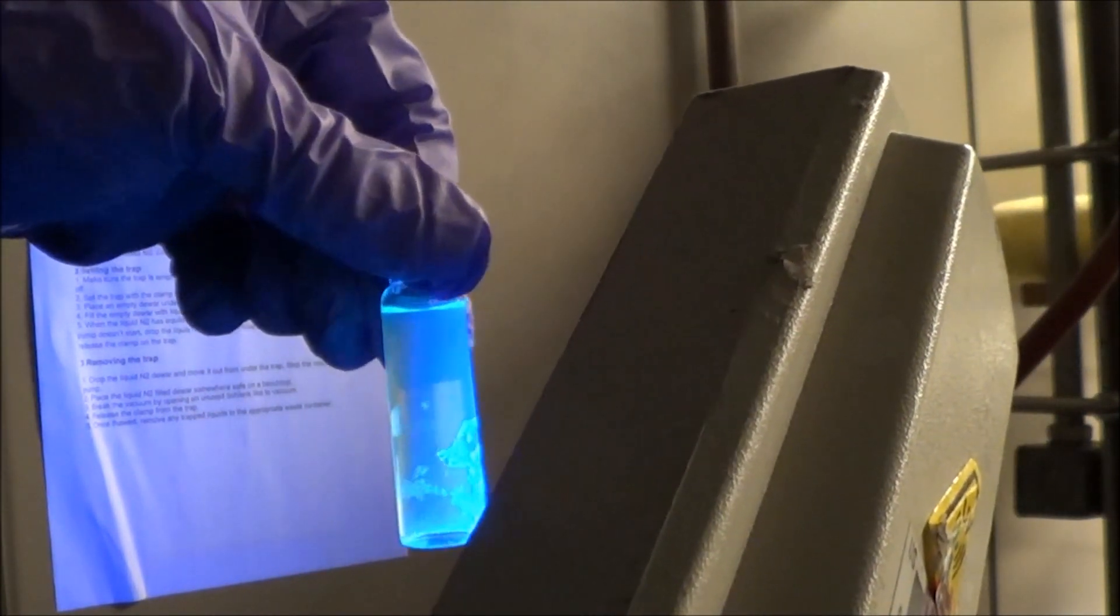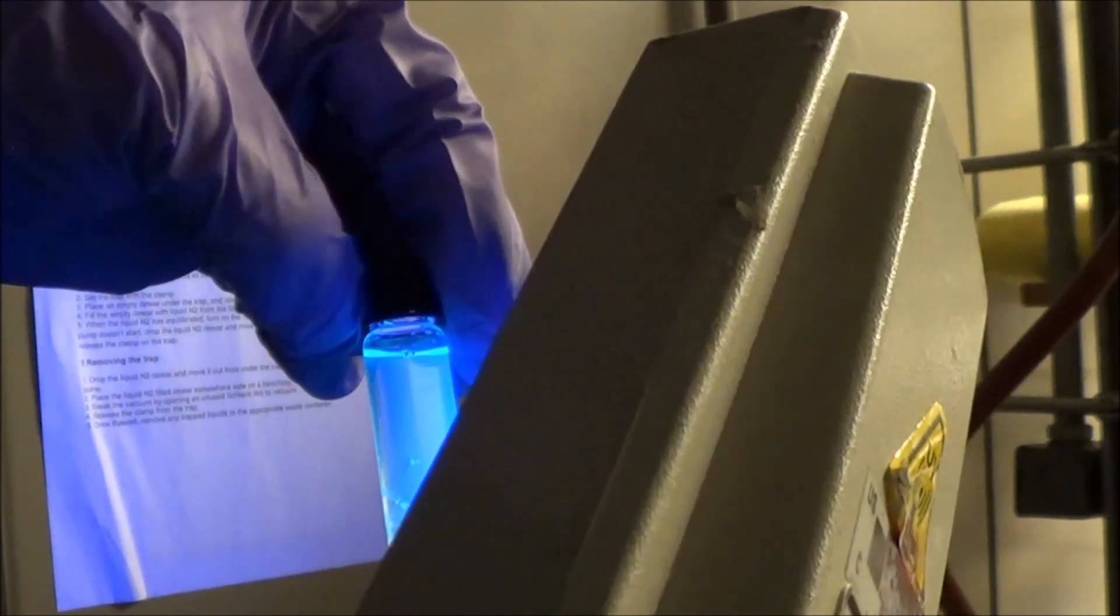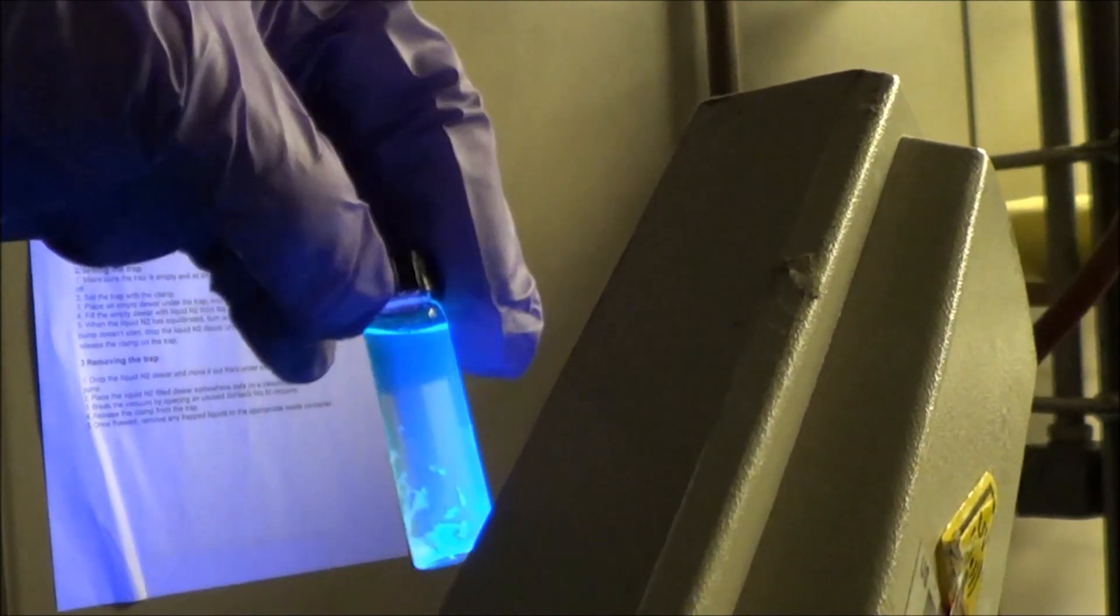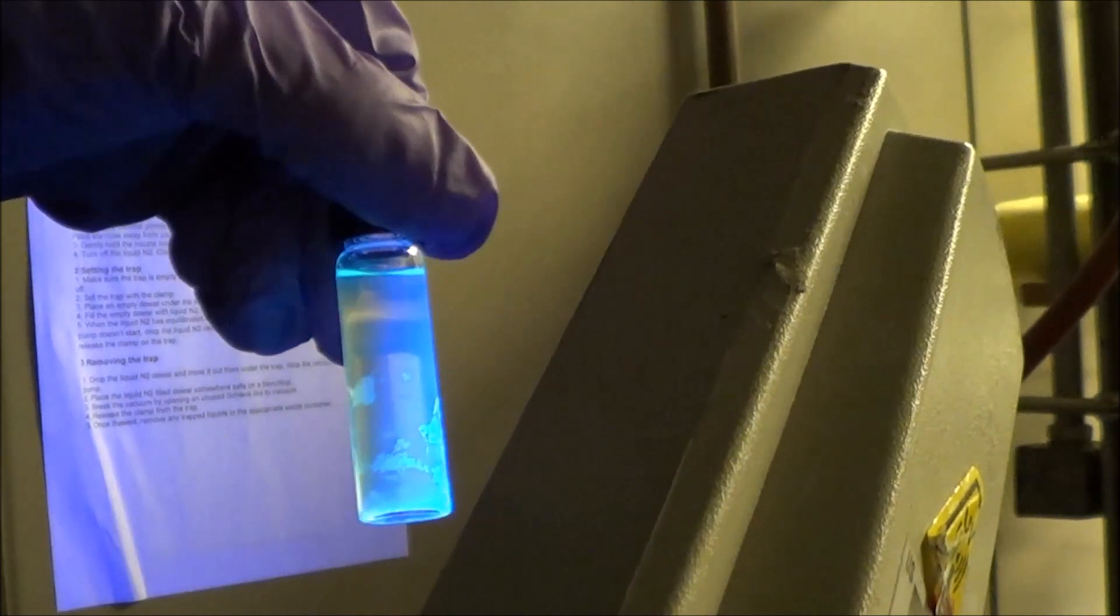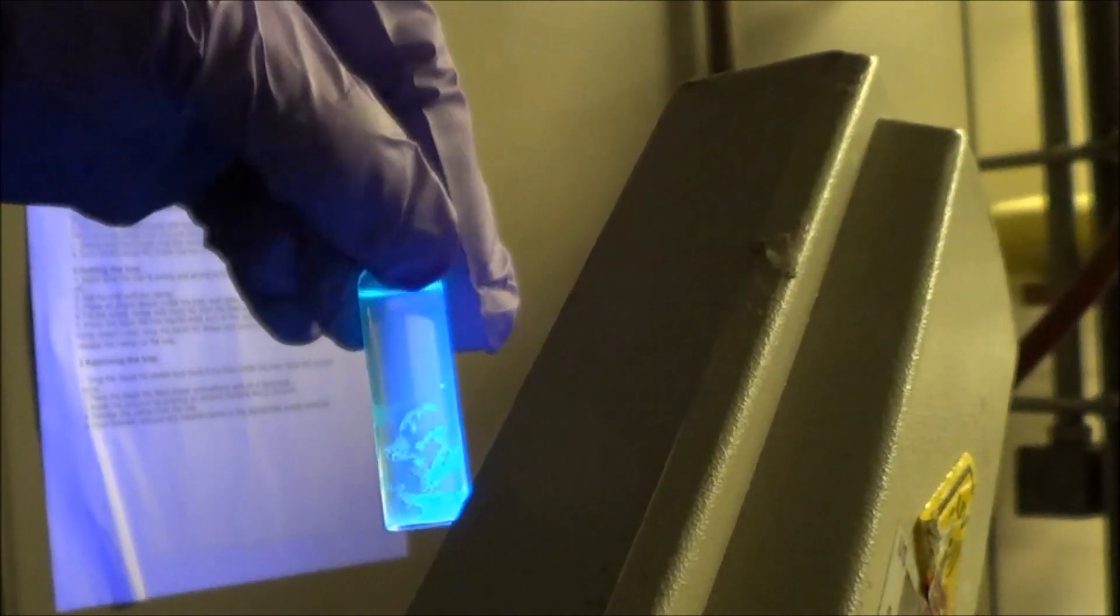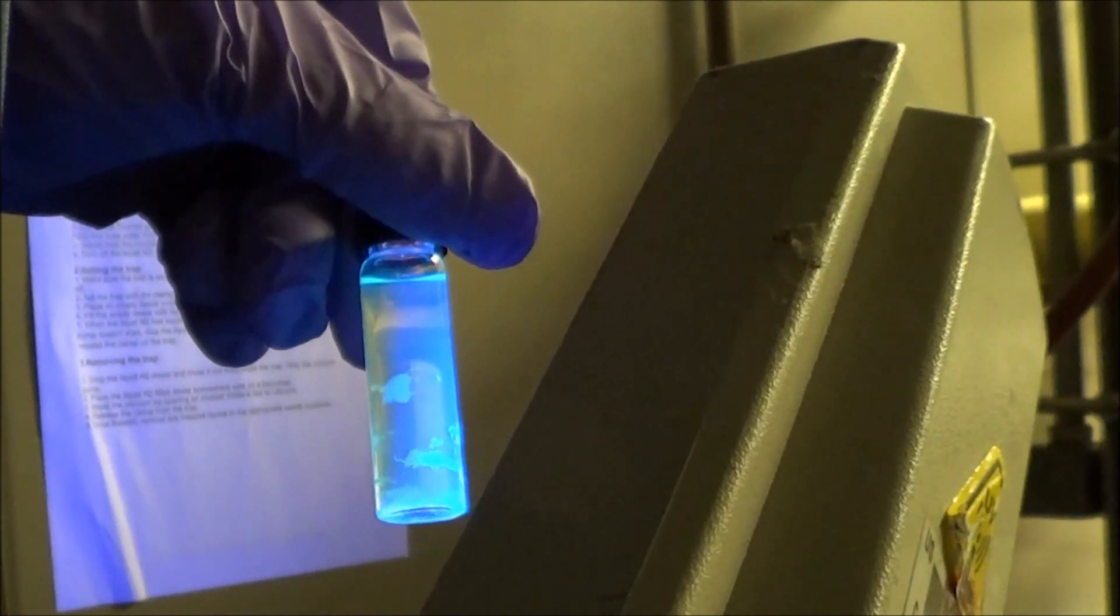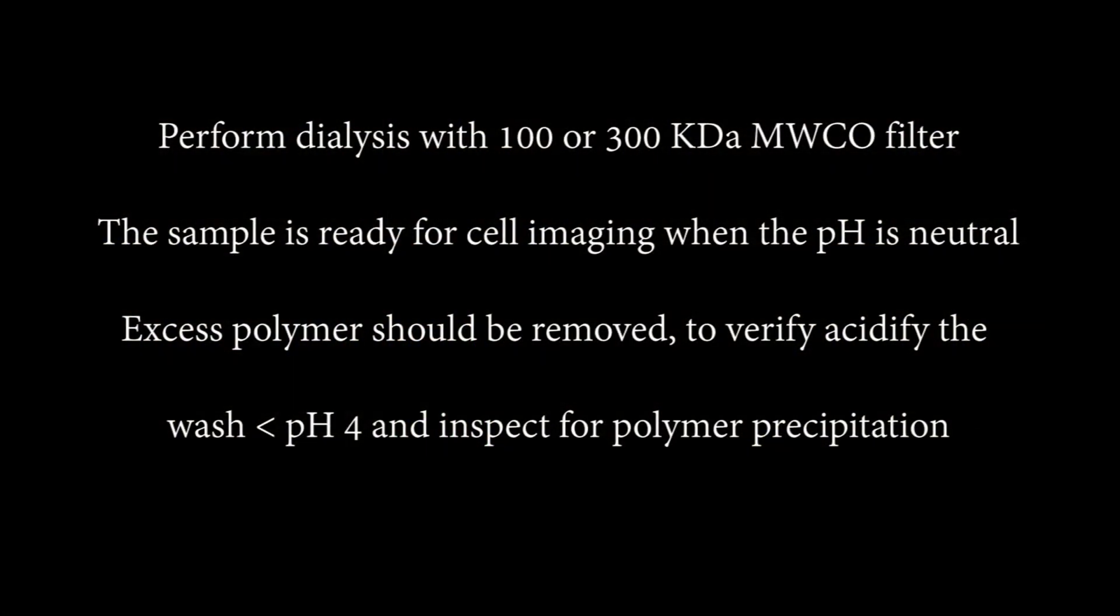A little bit of quantum yield is lost after you do dialysis to lower the pH. The hydroxide in the solution is actually good for the dots, it makes them appear a little bit brighter. The last thing you do is dialysis with 100k molecular weight cutoff filters. We use centrifugal ones, or you can use dialysis bags, and after that you're ready to do some cell imaging.